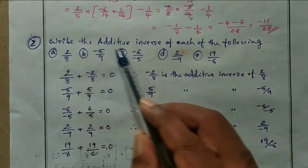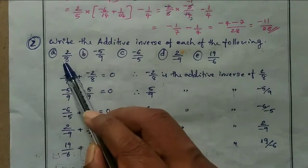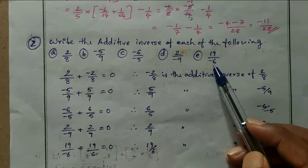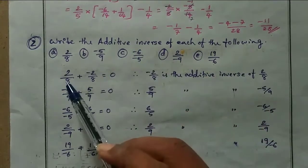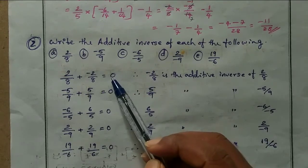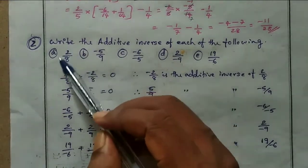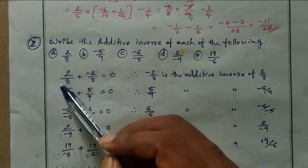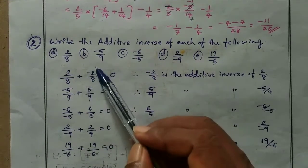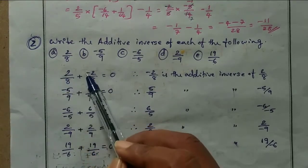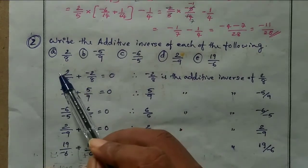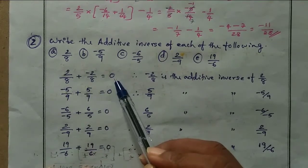Next, question 2: write the additive inverse of each of the following — (a) 2 by 8, (b) minus 5 by 9, (c) minus 6 by minus 5, (d) 2 by minus 9, (e) 19 by minus 6. Additive inverse means a number that, when added to the given rational number, gives the answer 0.